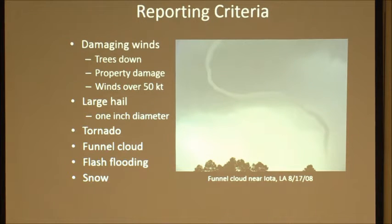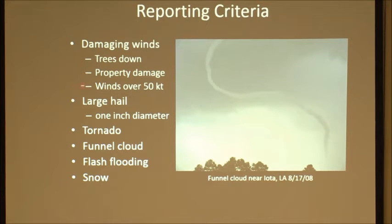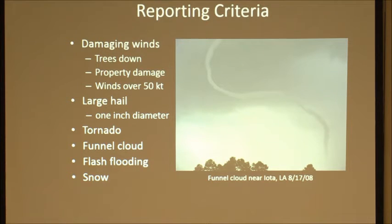The criteria we're looking for in the weather business — any kind of damage from winds, related trees down, property damage. If someone has an anemometer and measures wind speeds over 50 knots or 58 miles per hour, that's the threshold. For hail, the official severe criteria is one inch, but we like to get any hail reports — quarter-inch, pea-sized, whatever. It helps us assess what we're looking at on the radar to know what's actually occurring in the community.